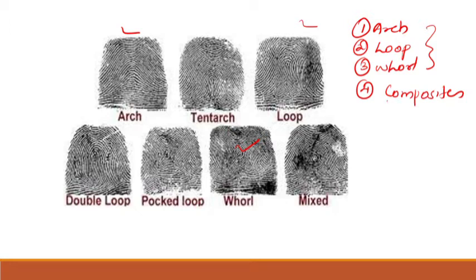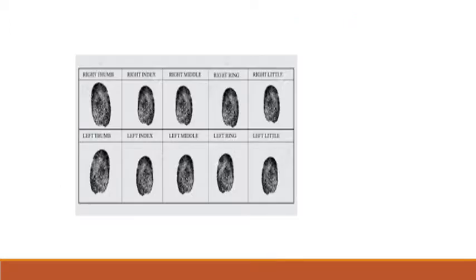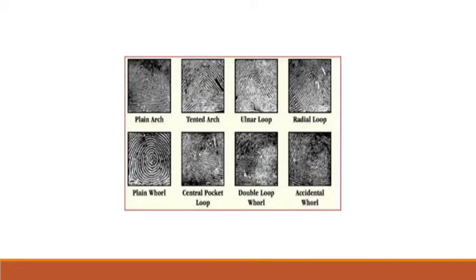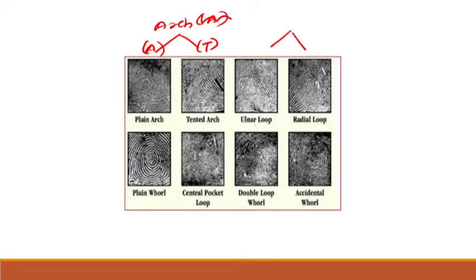Arch is represented by the symbol A and has two types: plain arch (symbol A) and tented arch (symbol T). Loops have two types: ulnar loop (symbol U) and radial loop (symbol R).